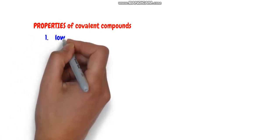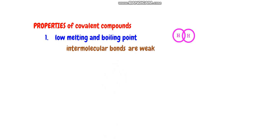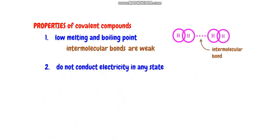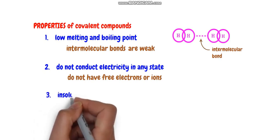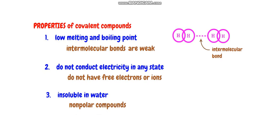Now let us see properties of covalent compounds. First, they have low melting point and boiling point. Second, intermolecular bonds are weak as compared to electrovalent bonds — in electrovalent bonds the bond is stronger, whereas in covalent compounds weak bond formation occurs. Third, covalent compounds do not conduct electricity in any state, as they do not have free electrons or ions. They are also insoluble in water — that is, insoluble in polar solvents but soluble in nonpolar compounds.